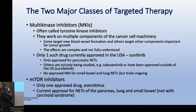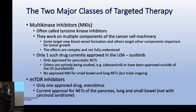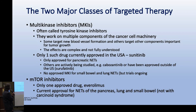The two major classes of targeted therapies are: multikinase inhibitors, which target blood vessel formation and small parts of the cancer cell machinery - the only approved drug here is sunitinib (Sutent), approved only for pancreatic neuroendocrine tumors. And then mTOR inhibitors, with one approved drug, everolimus (Afinitor), approved for small bowel, pancreas, and lung neuroendocrine tumors.